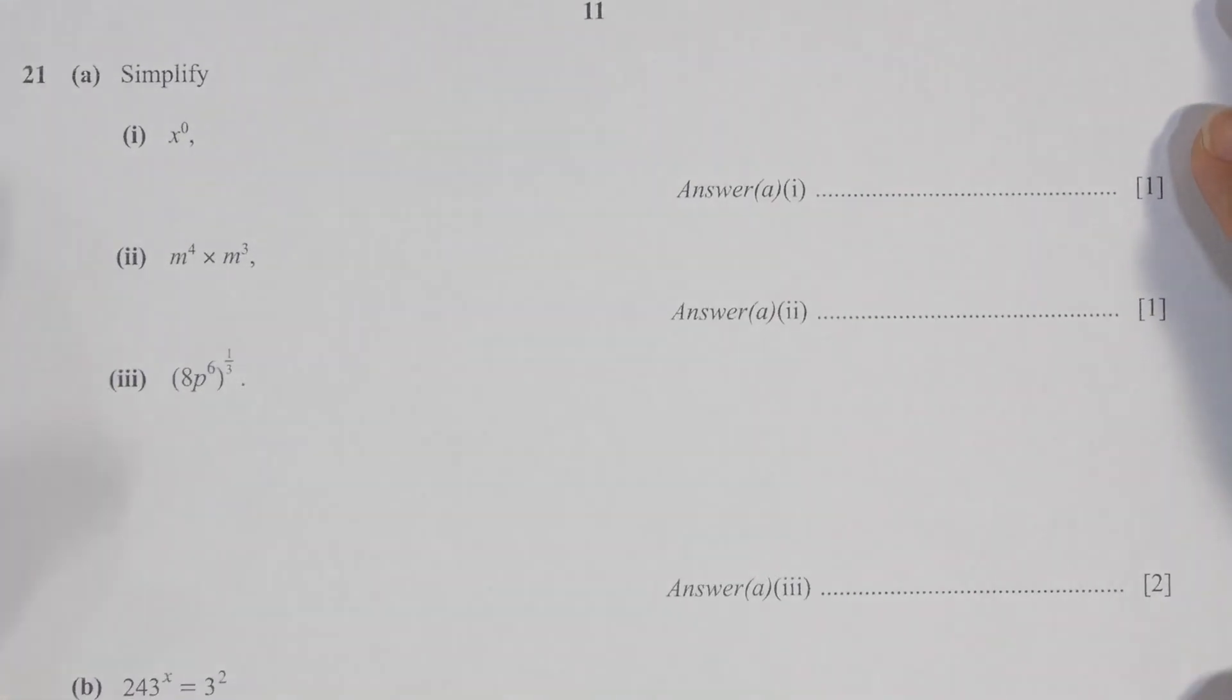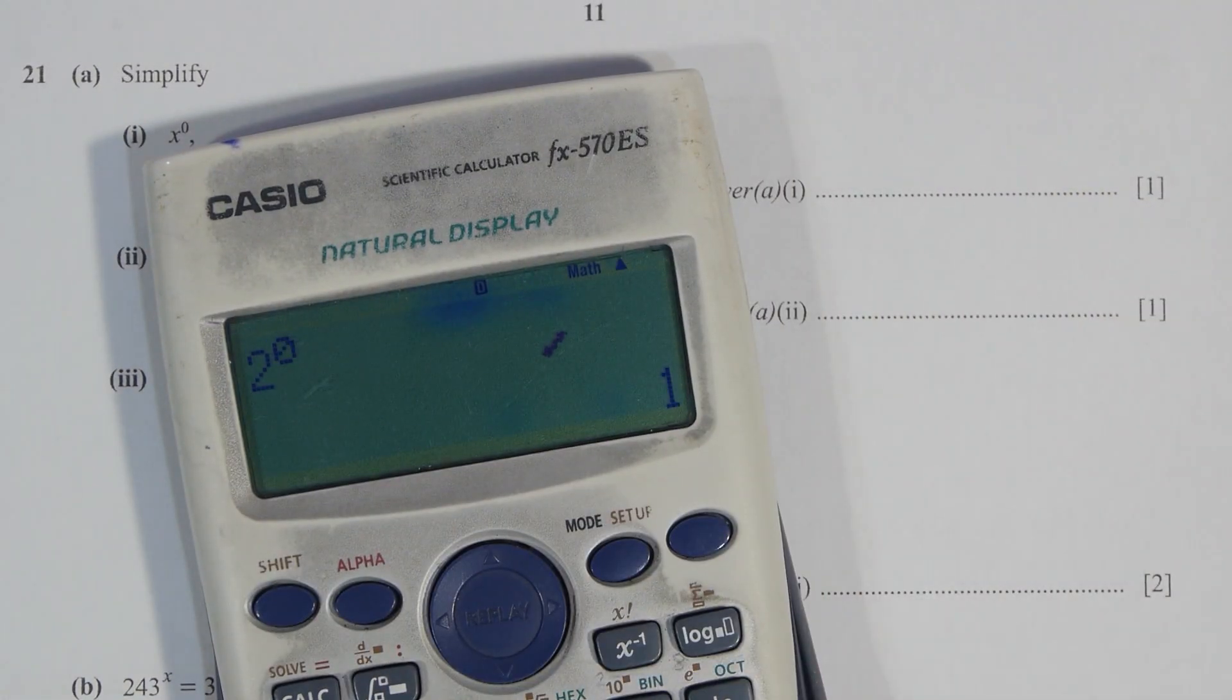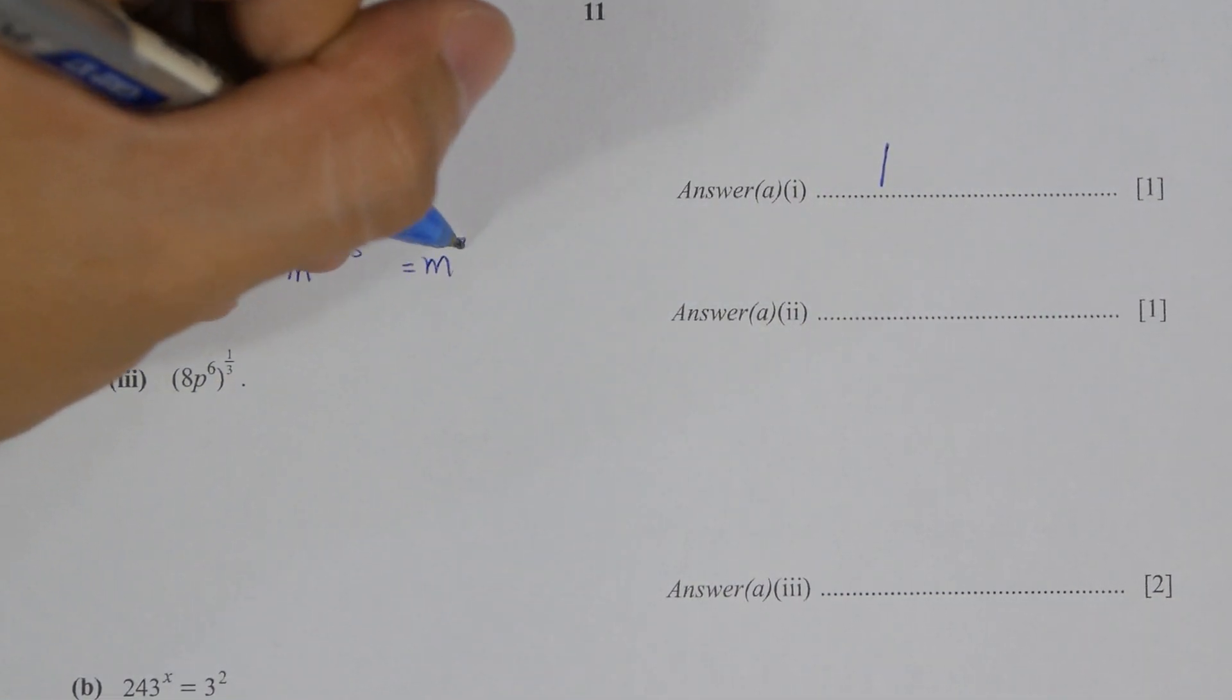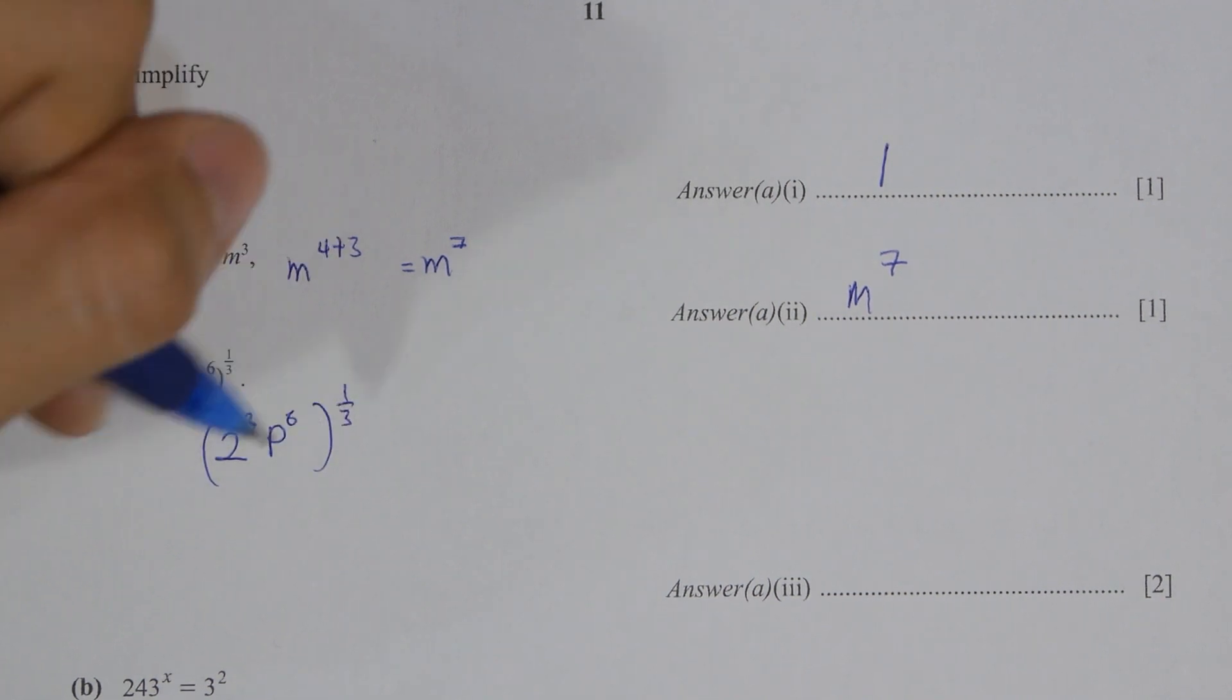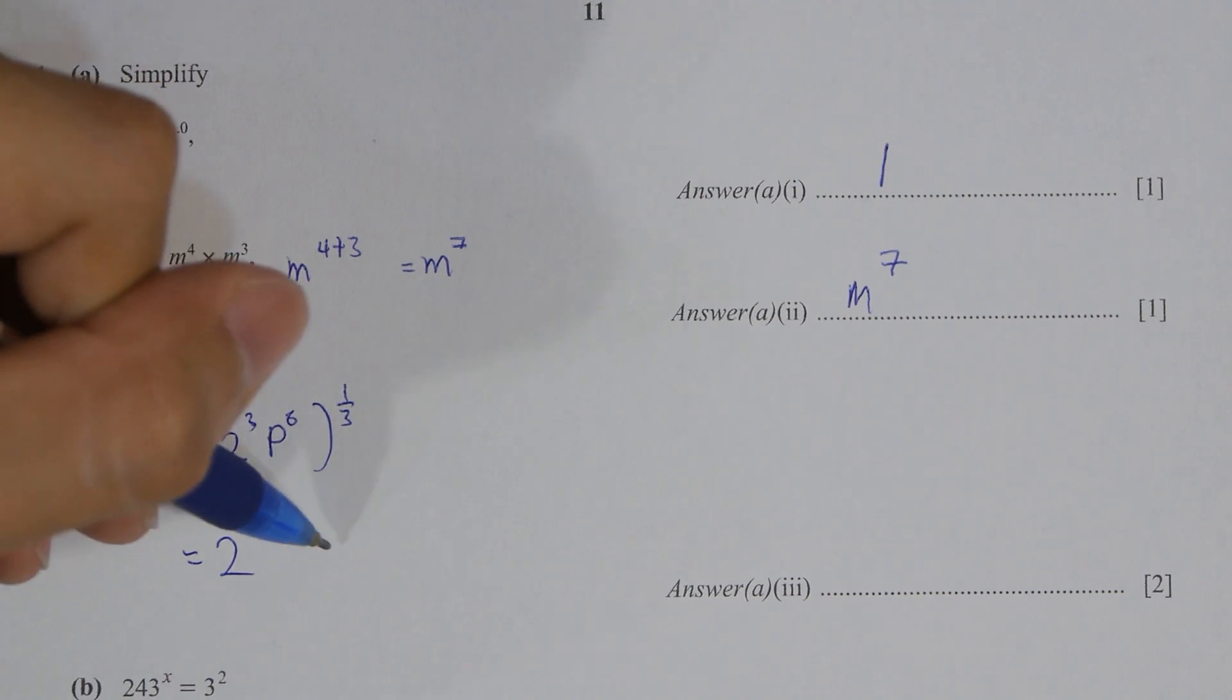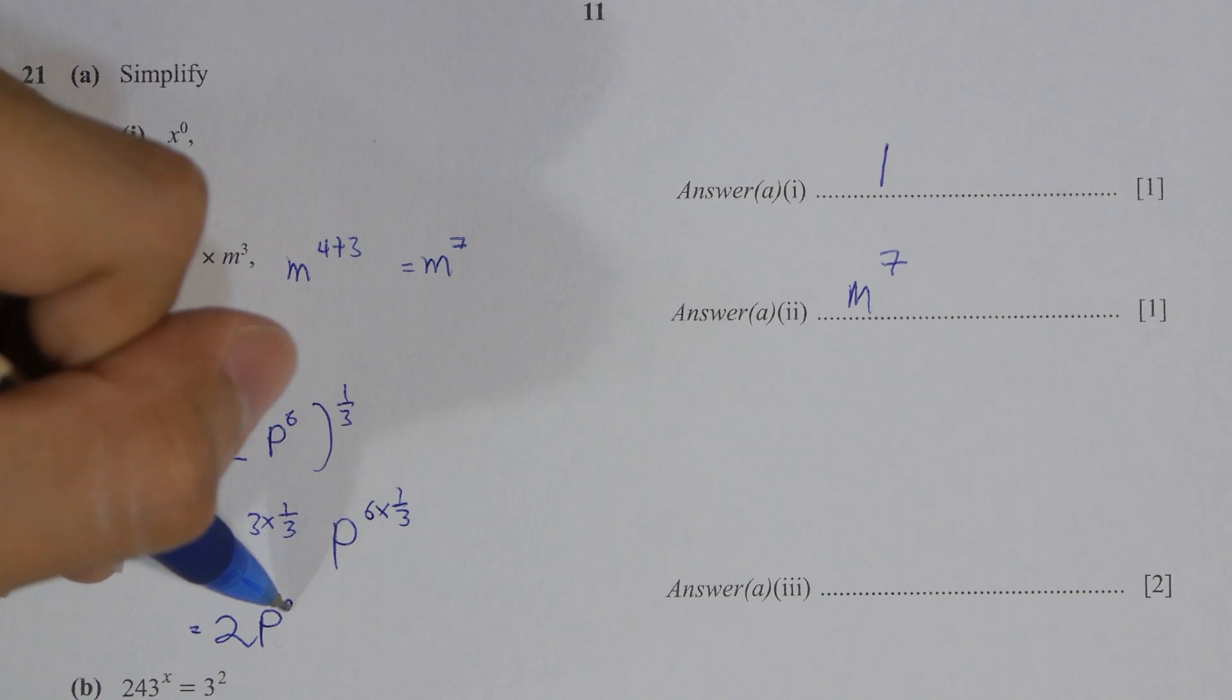As for question 21, x to the power of 0 is 1, whereby for the second part 4 plus 3 so m to the power of 7. For the last part I change 8 and 8 into 2 to the power of 3 first, then multiply 1 over 3 into their respective power, so you will get 2p square as 21a part 3.